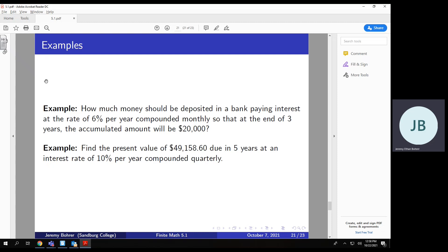In the next problem, we're asked to find the present value of $49,158.60 due in five years, at an interest rate of 10% per year, compounded quarterly.